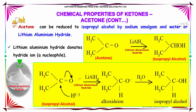In the step-by-step mechanism, the H− ion attacks the carbonyl carbon and the double bond shifts its lone pair to the oxygen, so oxygen obtains a negative charge and hydrogen forms a covalent bond with the carbon atom. When hydrolyzed using H2O, it forms isopropyl alcohol.